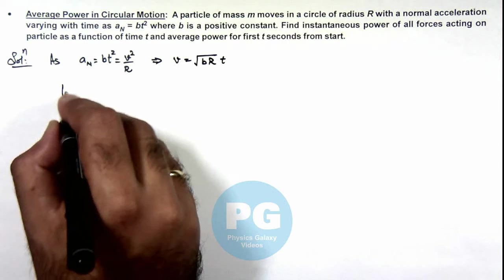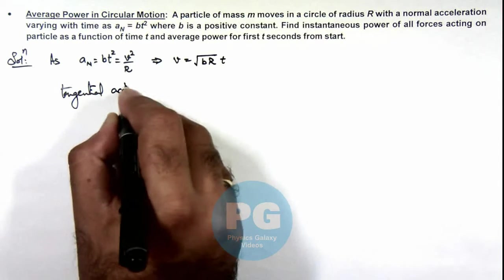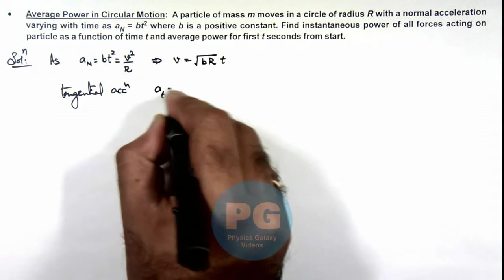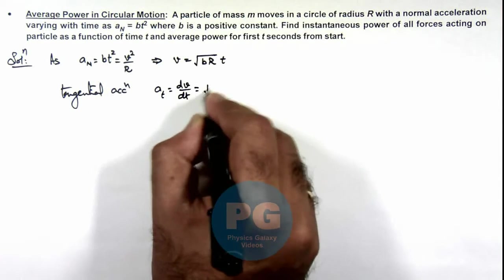So the tangential acceleration of particle can be given as dv/dt, and that is written as root of bR.